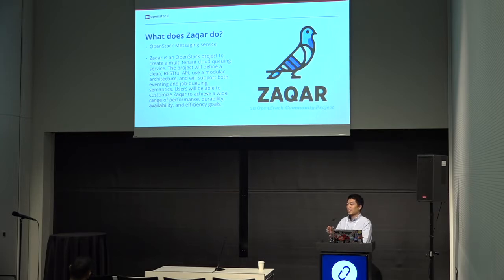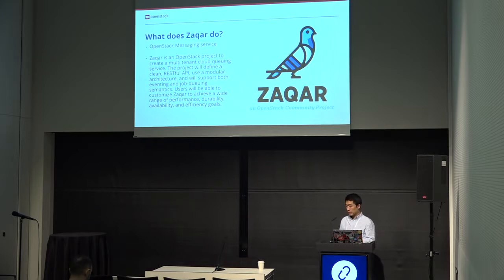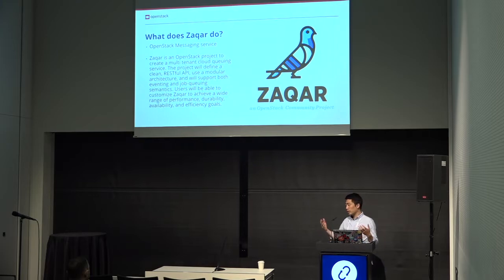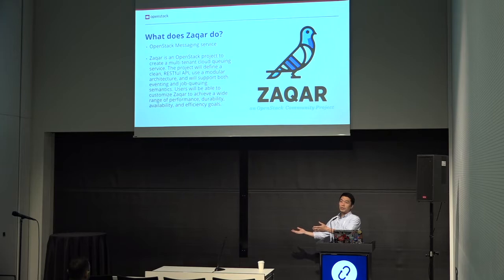Just in case you weren't aware, Zaqar is a messaging service of OpenStack. Services like Zaqar, DesignEdge, or Trove are still very important services for the IaaS layer, because you may have done a lot of things on top of Kubernetes, but you still want to get some services like messaging or database from the IaaS layer. You don't want to maintain a messaging service on your Kubernetes cluster because it doesn't make sense.